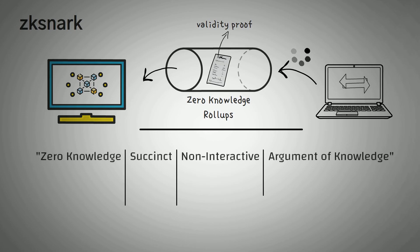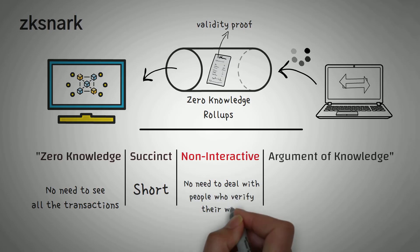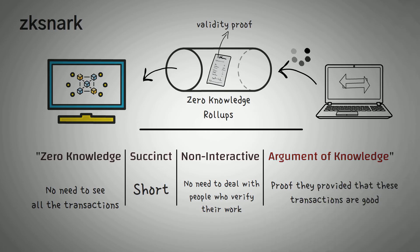If you break it down, ZK snarks is an acronym. Zero knowledge means that they don't actually have to see the transaction data, this is very important. Succinct means that it's short. Non-interactive means that they don't have to deal with the people who verify their work. And argument of knowledge basically just means this is the proof that they provided that the transactions are good.